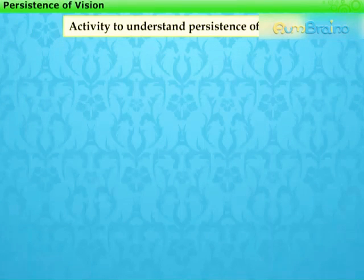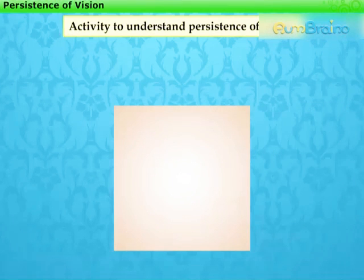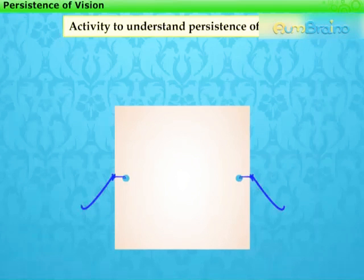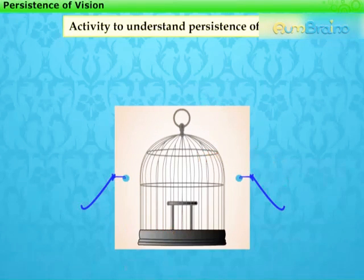Let us perform an activity to understand persistence of vision. For this, take a square piece of cardboard of size 6 to 8 centimeters. Make two holes as shown, and thread a string through the two holes. Now paste a picture of a cage on one side of the cardboard.